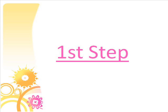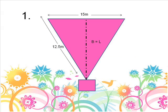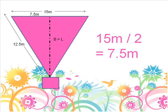The first step. This is an isosceles triangle with the legs 12.5 meters and the base 15 meters. If we cut this triangle in half, it is a right triangle. The first thing we are going to do is divide the base by 2 so that we know what the b or L is.